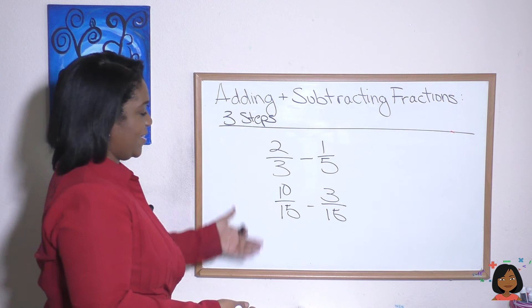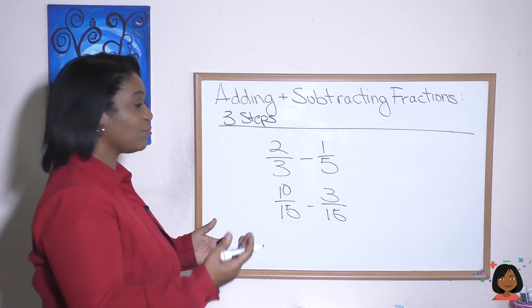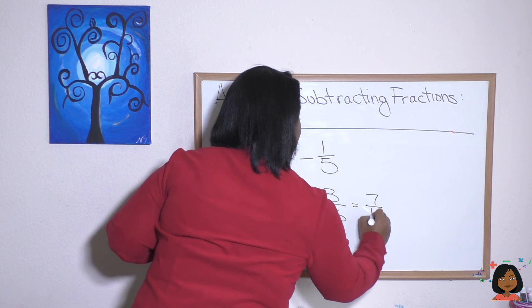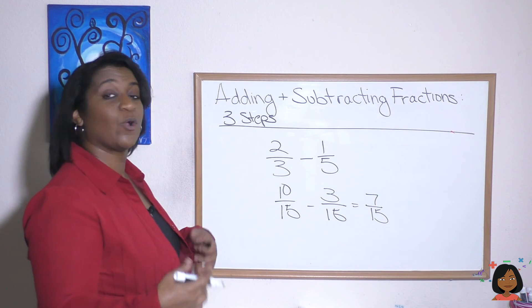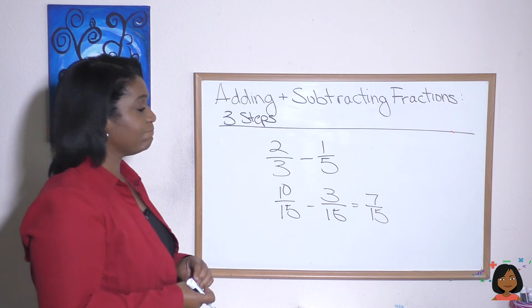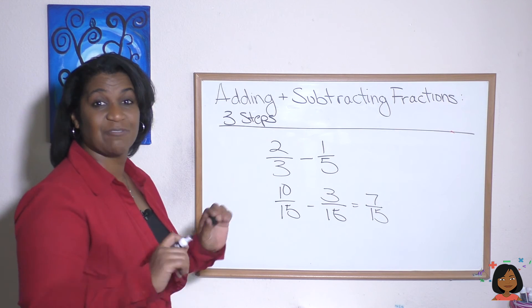Now let's operate. 10 fifteenths minus three fifteenths is seven fifteenths. And then our last step is to simplify or to look to simplify. Can seven fifteenths be simplified? It actually cannot, so we're done right there.